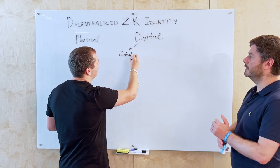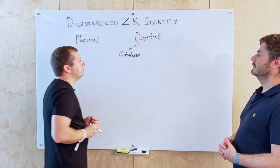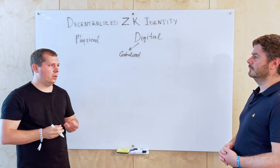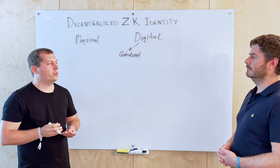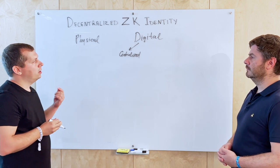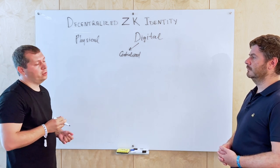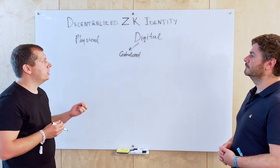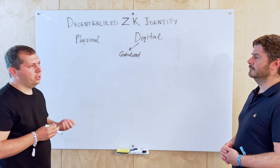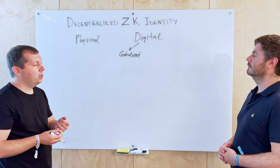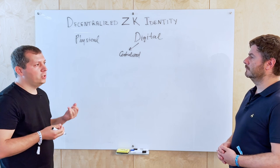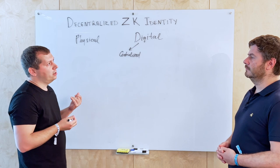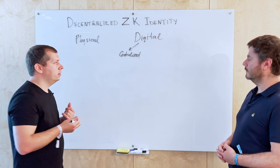An example of a centralized identity would be: you have a website and you have a login and password there. For each website you have your own login and password. We can think of digital identities as an identifier or account, and then some data — we can call it a claim, which is statements about this identity.